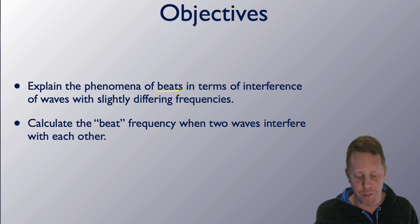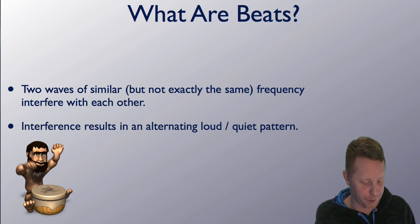Let's start off by talking about what beats are. When we have two waves that have very similar but not exactly the same frequencies, they're going to interfere with each other. And this interference, if we're talking about sound waves, results in an alternating loud-quiet pattern. That loud-quiet pattern at a much lower frequency that's at the difference of those two frequencies is called the beat frequency, the beat phenomena.